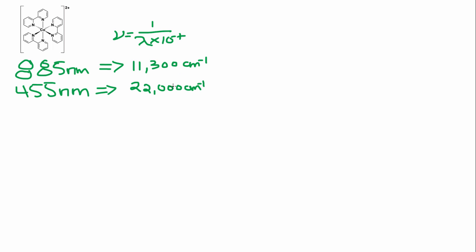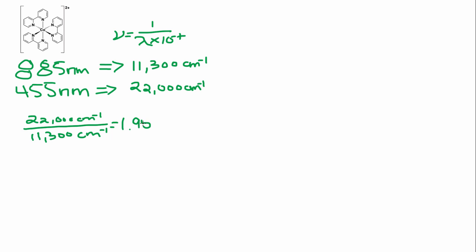Now that we know the energies of the two absorptions, we want to determine the ratio between them, placing the highest energy on top. So we have 22,000 cm⁻¹ over 11,300 cm⁻¹, which gives a ratio of 1.95.